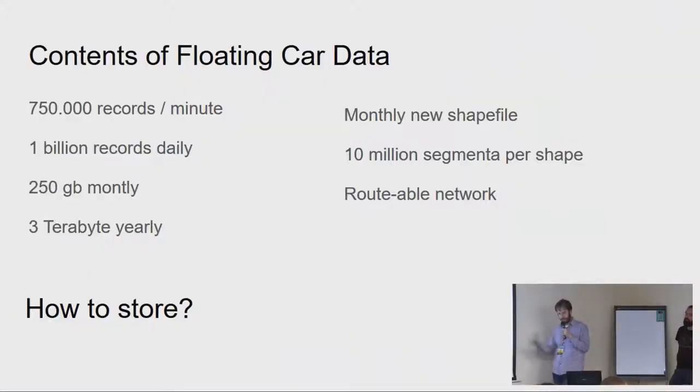And if you would collect all the floating car data, how much is that? This gives a bit of an idea. It is 750,000 records a minute. That is about 1 billion records a day. That roughly translates to 250 gigabytes per month. That would be 3 terabytes a year, if you store that. On top of that, monthly they provide a new road network. A new road network means there can be changes in the road. That's about 10 million segments, and it should be a routable network, of course. How do we store that? Because obviously you need that to use them together.